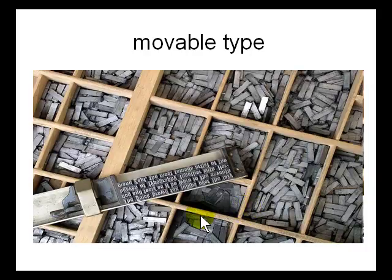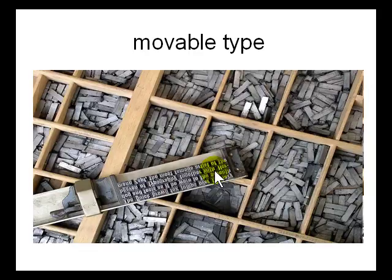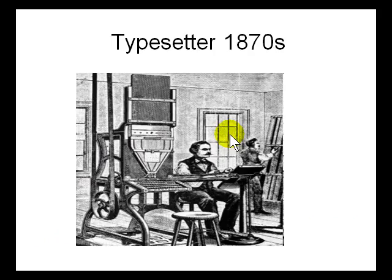Here is an example of movable type. You don't see it anymore because of computers, but before, this is a thing in which characters are arranged to form a paragraph — it's like a rubber stamp. A lot of the terminology we use comes from original typesetting from a hundred years ago.